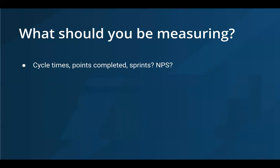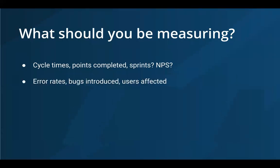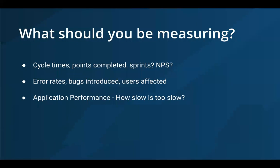What should you really be measuring? Cycle times, points completed, sprints completed — these are productivity metrics prevalent in engineering teams, but they talk about the amount of work done rather than the quality. Better metrics to add to the mix: how many errors does our application have, how many bugs have we introduced, how many users have been affected by bugs, and is there slow performance — how slow is too slow? If our checkout page takes three seconds to load, is that acceptable? Can we put measures in to alert us when these problems arise and report on them over time?